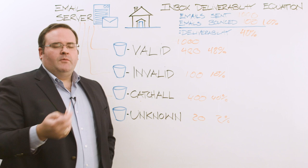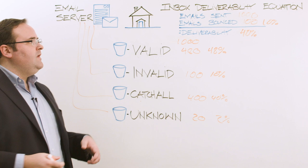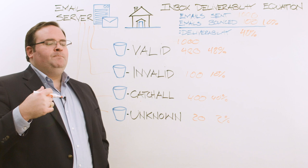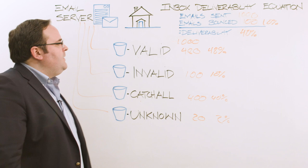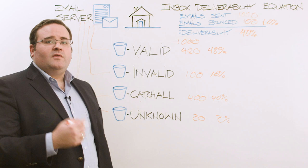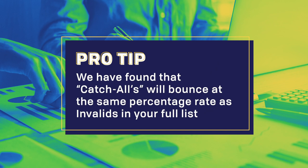People often ask us about that large segment of catch-alls — sometimes it's very small, but they're usually B2B addresses. Catch-alls are very popular in the healthcare industry, government, .edu, school, and education domains. We don't want to lose 40% of the emails going into our campaign, and just because those are ambiguous doesn't mean we shouldn't send to them. Through a ton of research, we've found that catch-alls will bounce at the same percentage rate in almost all use cases as your invalids.